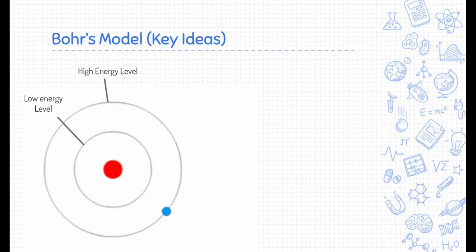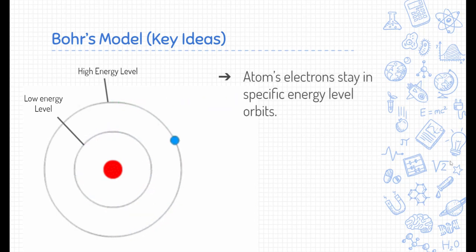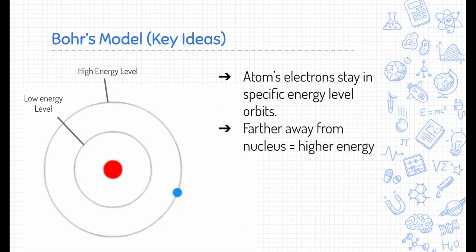Well, Bohr came up with certain key ideas of a new type of atom model called Bohr's model. He said that atoms' electrons have to stay in specific energy level orbits. He also said that electrons further away from the nucleus have higher energy than those closest to the nucleus. The ones closest to the nucleus are in the ground state, and the ones farther away at the highest energy levels are in the excited state.